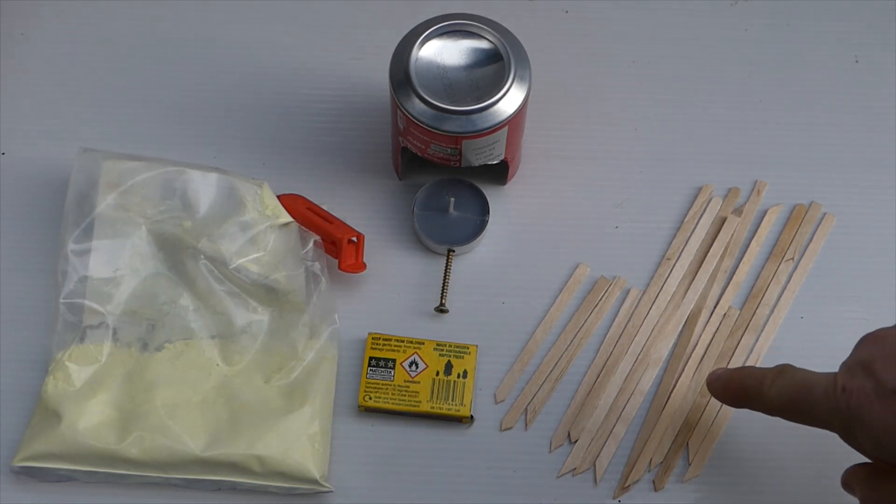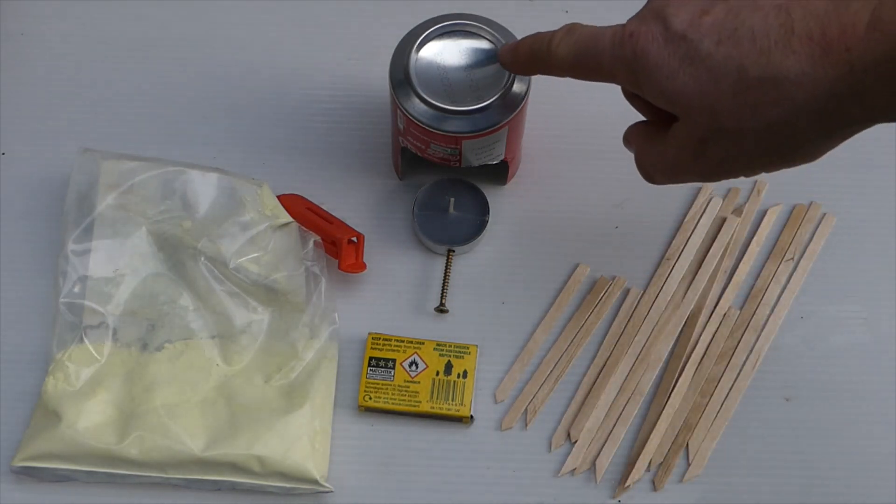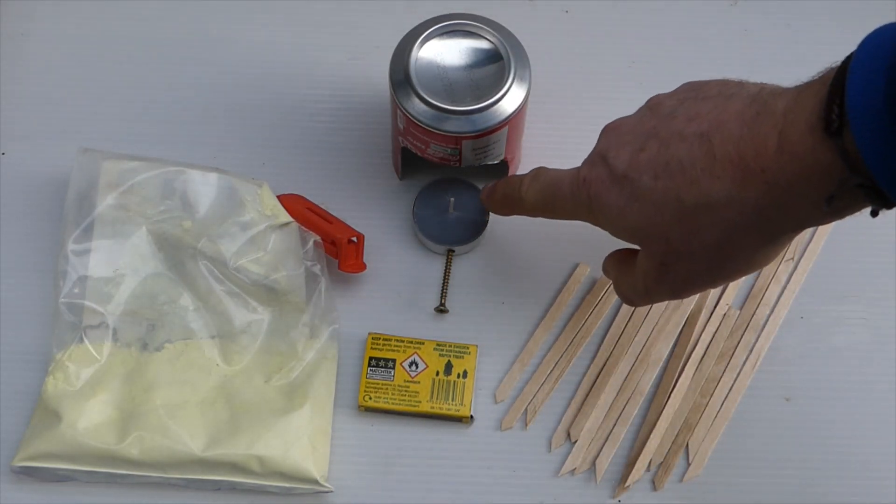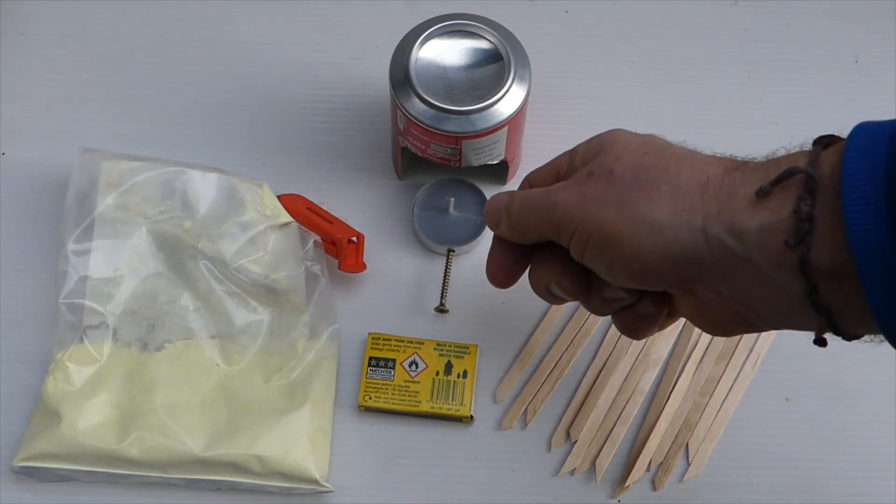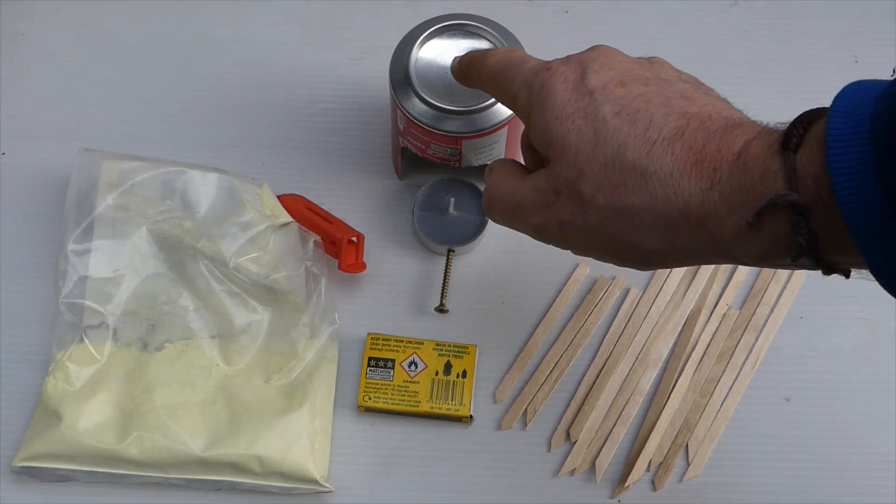So here's what you'll need. Here's the coffee stirrers that have been cut to either a chisel point or a point. You've got a Coke can there that's been cut down to accept that tea light in there. The screw in there is so I can pull it in and out. That's your matches to light it and that's your sulfur that's going to go in there and be melted.